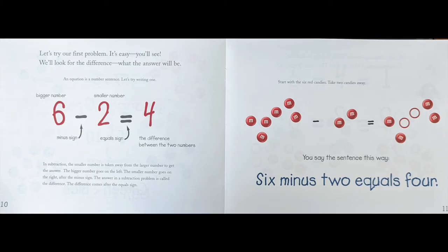The difference comes after the equal sign. Start with six red candies, take two candies away. You'll say the sentence this way: 6 - 2 = 4.